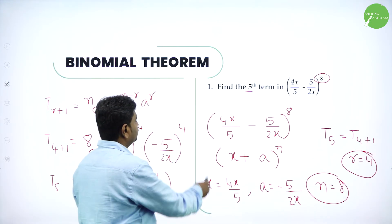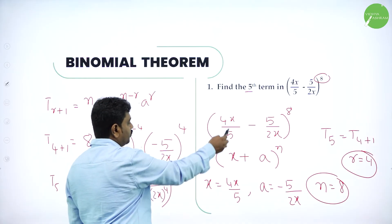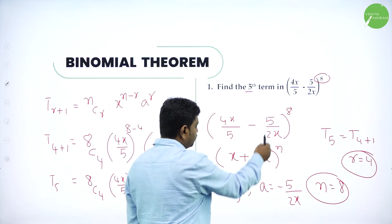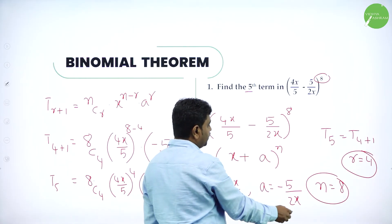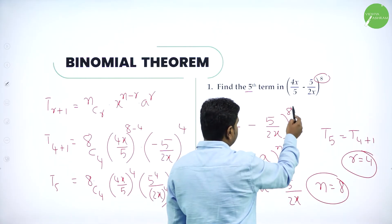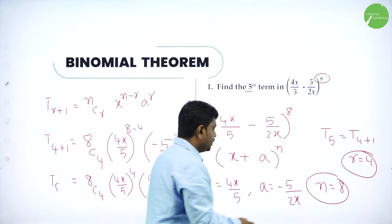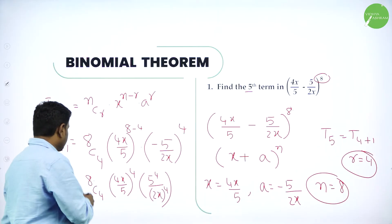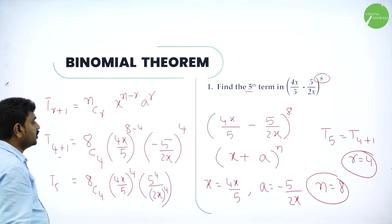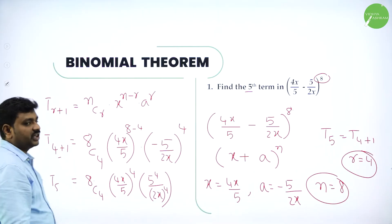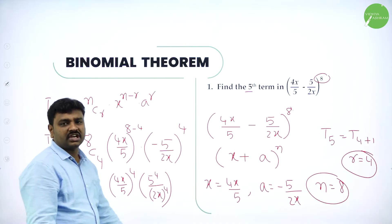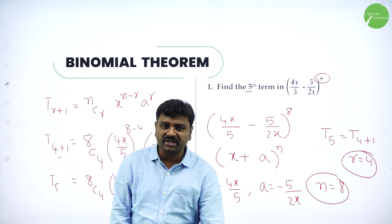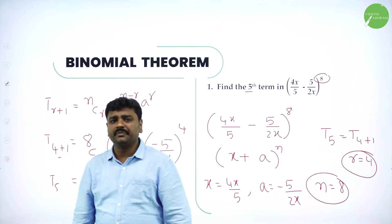Interesting! The first term was 4x by 5, second term was minus 5 by 2x, power was 8, and they wanted the 5th term, so r was 4. Using the formula T(r+1) equals nCr times x power n minus r times a power r, we got T5 equals 1120.